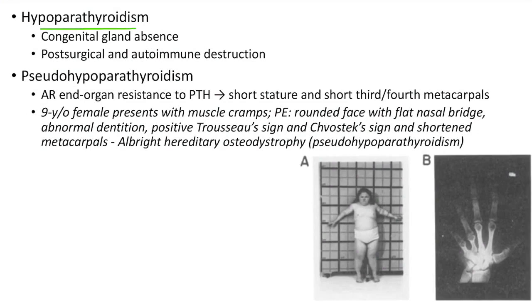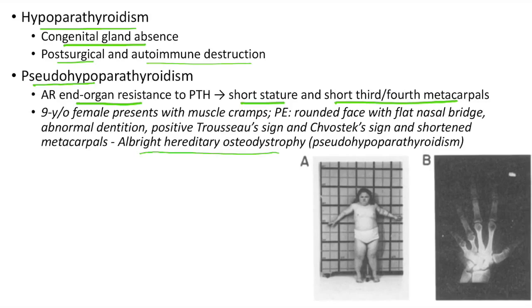Hypoparathyroidism can occur due to congenital gland absence or post-surgical and autoimmune destruction. Pseudohypoparathyroidism (also known as Albright hereditary osteodystrophy) involves autosomal recessive end-organ resistance to parathyroid hormone, leading to short stature and short third and fourth metacarpals. Clinical case: A 9-year-old female presents with muscle cramps. Physical examination shows rounded face with flat nasal bridge, abnormal dentition, positive Trousseau sign and Chvostek sign, and shortened metacarpals — a classic case of Albright hereditary osteodystrophy. This picture shows an X-ray of short third and fourth metacarpals seen in this condition.